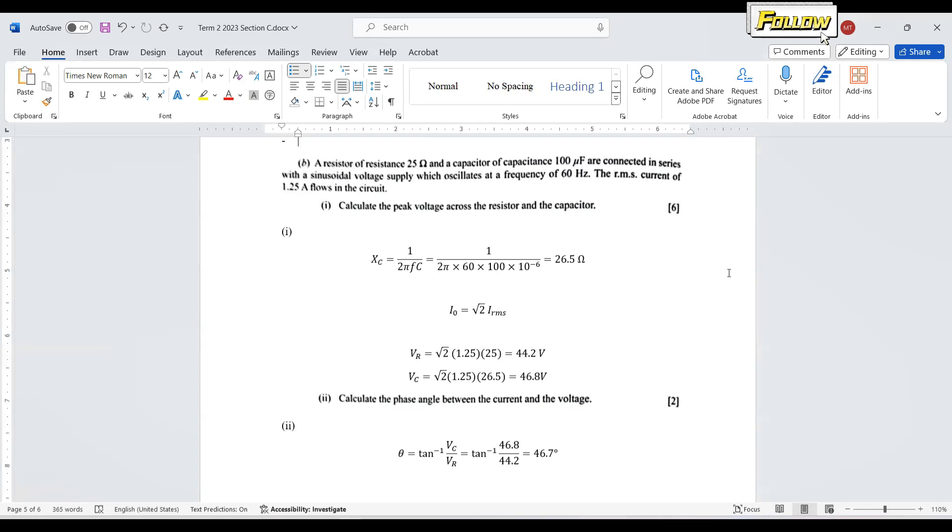The first one is to get the voltage across the resistor. So what we have is the current multiply the resistance, which equals 44.2 volts. And the next one is the peak voltage across the capacitor. So what we have is also the current multiply the reactance of the capacitor, which equals 46.8 volts.